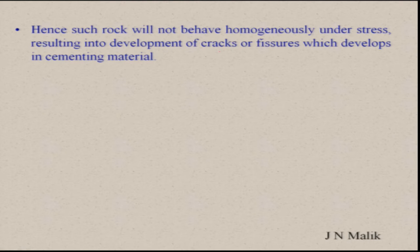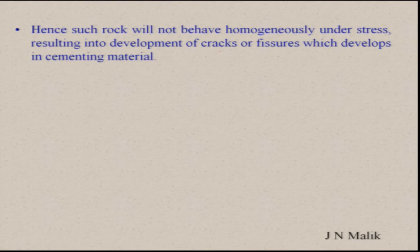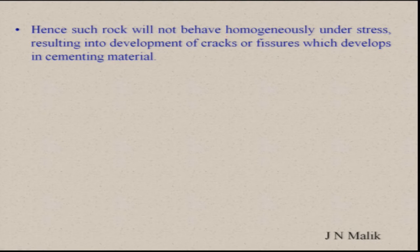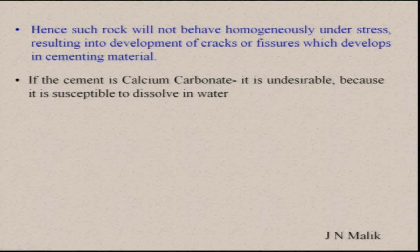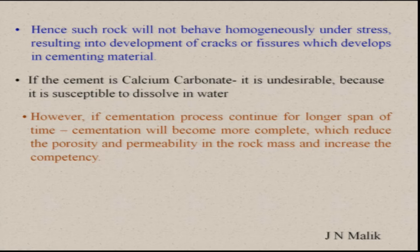If you have softer material — rock clasts or fragments of minerals which are less hard — then it will break early as compared to the ground mass. Because conglomerates have heterogeneous material, the rock will not behave homogeneously under stress, resulting in the development of cracks or fissures which develop in the cementing material. Either the cementing material will crack or the rock fragments will crack. If the cement is calcium carbonate, for example, it is undesirable because it is susceptible to dissolving in water. If you find the conglomerate cementation material is calcium carbonate, you should avoid it.